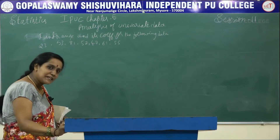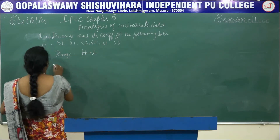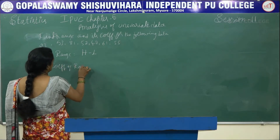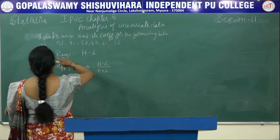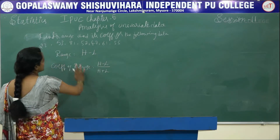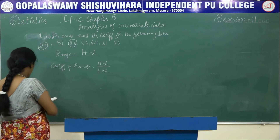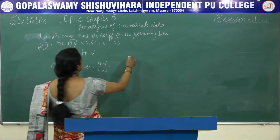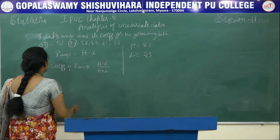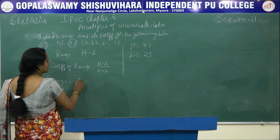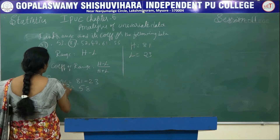The formula to find range is: range is highest minus lowest. To find coefficient of range, it is highest minus lowest divided by highest plus lowest. In the given data, the highest value is 81 and the lowest value is 23. So range is equal to 81 minus 23, which is 58.